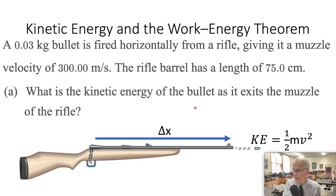What's the kinetic energy of the bullet as it exits the muzzle of the rifle? We started out with a bullet that had zero kinetic energy over this displacement. The hot gases are doing work on that projectile and it has at the end kinetic energy. So what are we asked to do first? We need to find the kinetic energy of this bullet.